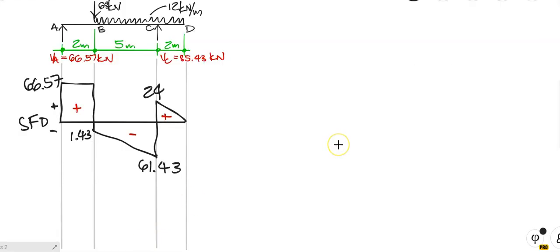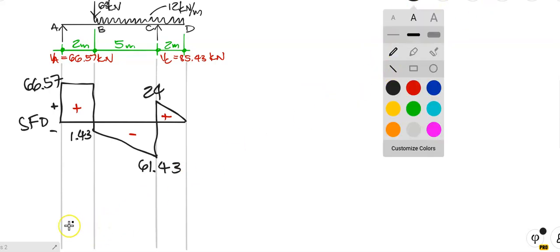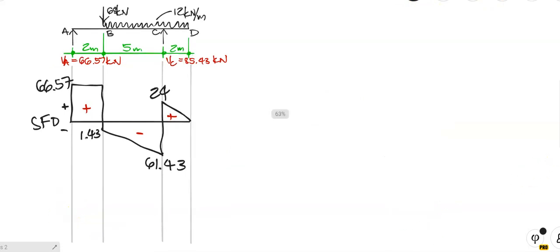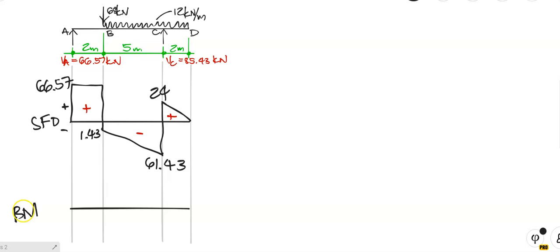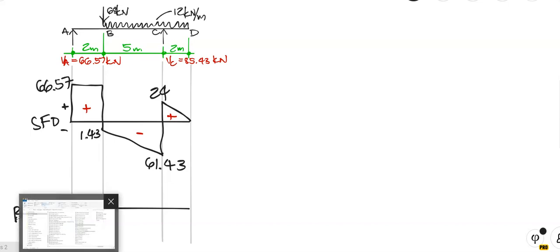Now draw the bending moment diagram. I'm going to draw my zero line. The bending moment diagram — as you know — we plot minus at the top and positive at the bottom. I'll explain why just now.